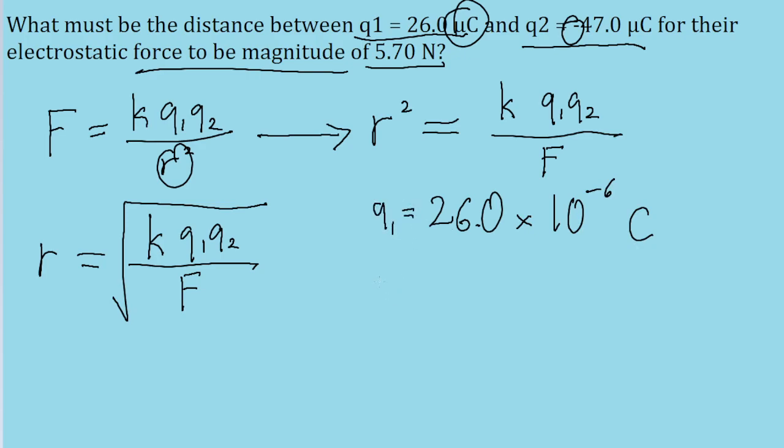And finally, remember that the Coulomb constant k has a value of 8.99 multiplied by 10 to the power of 9 newton meters squared per coulombs squared.